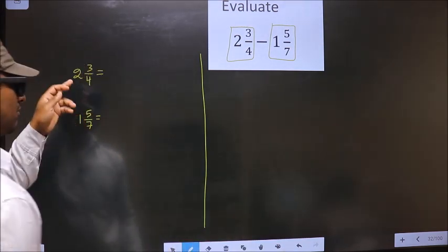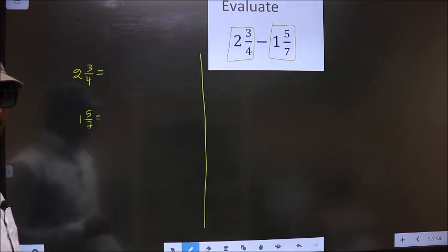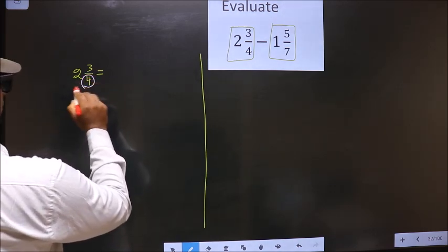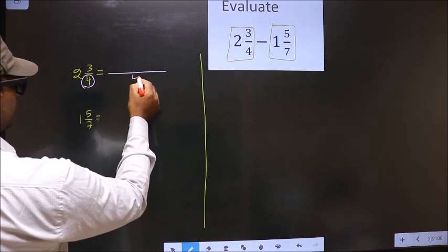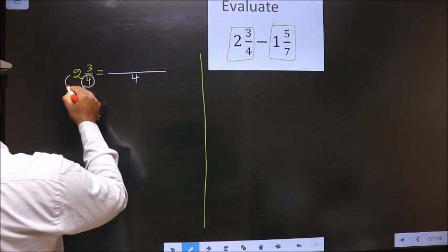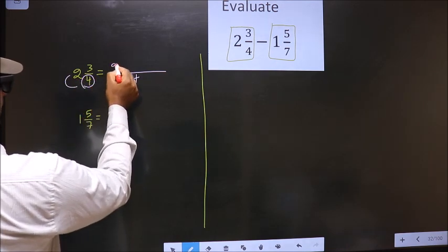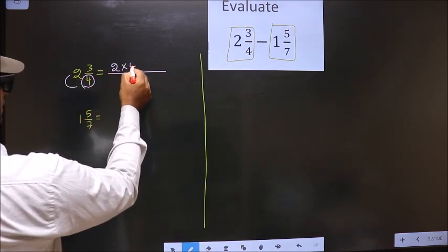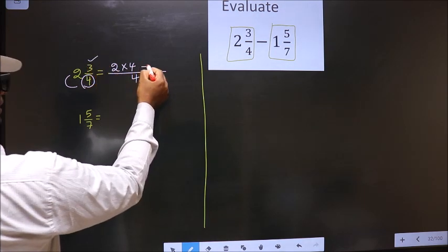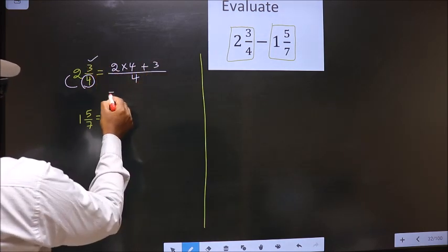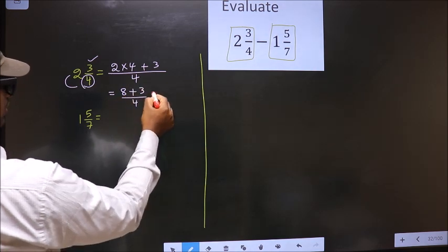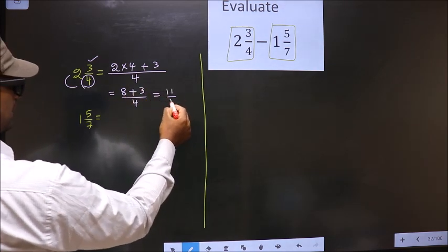How do we convert these to improper fractions? Here the denominator is 4, so you also write 4 in the denominator. In the numerator, we should multiply these two numbers — that is 2 into 4 — and also add this number, that is plus 3. So, 2 into 4 is 8, plus 3 by 4, that is 11 by 4.